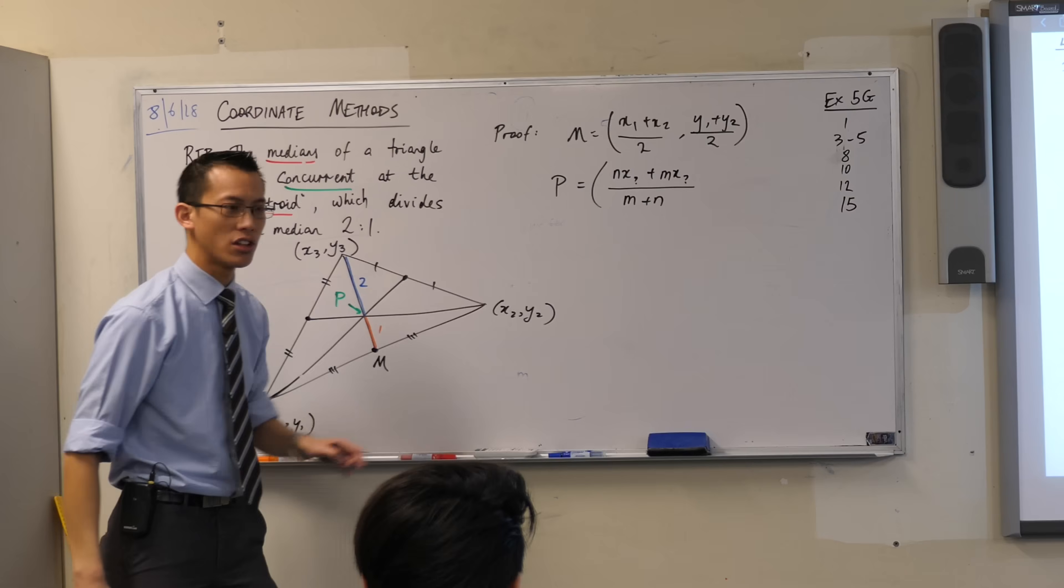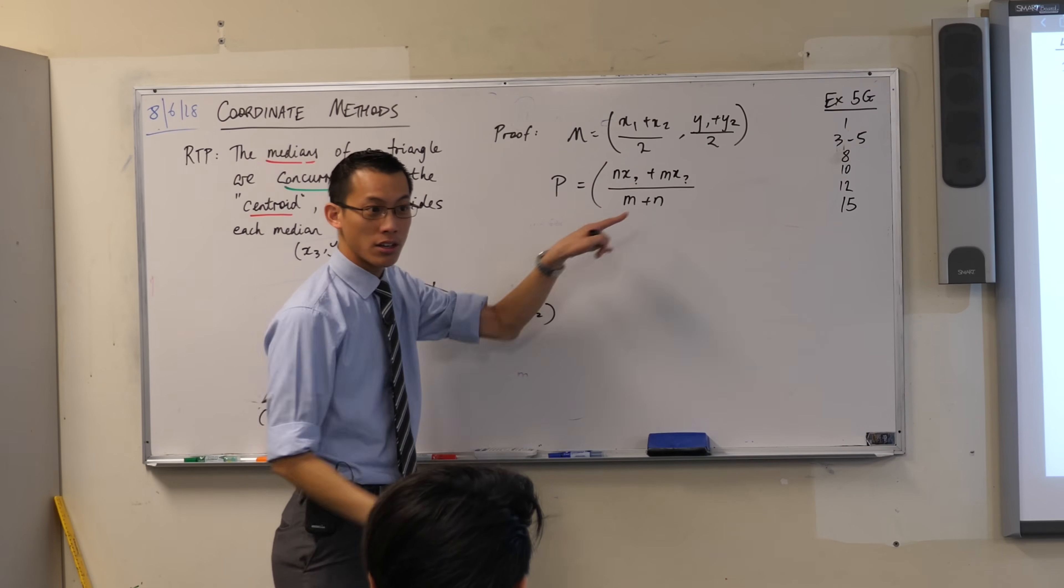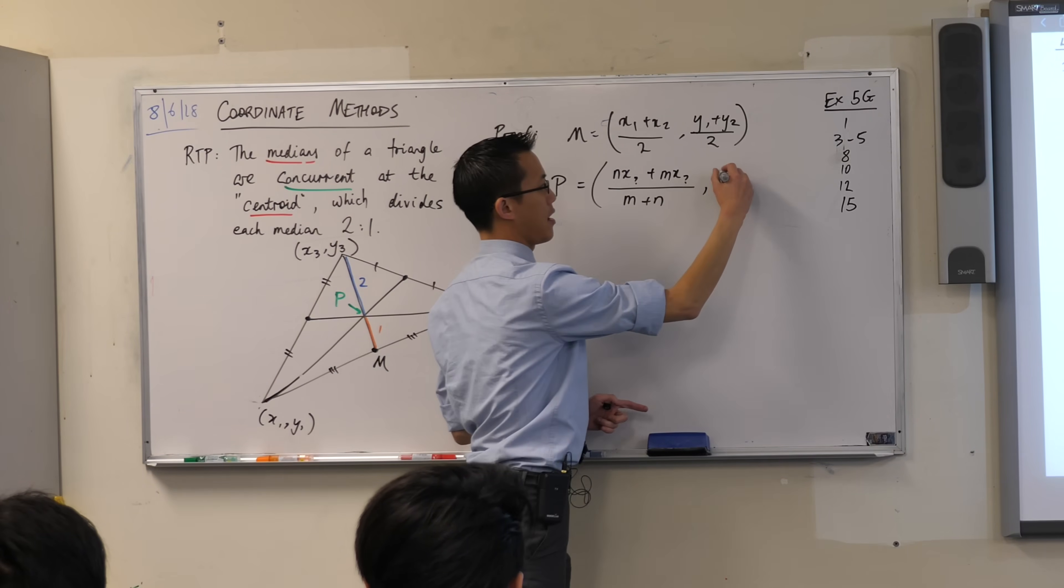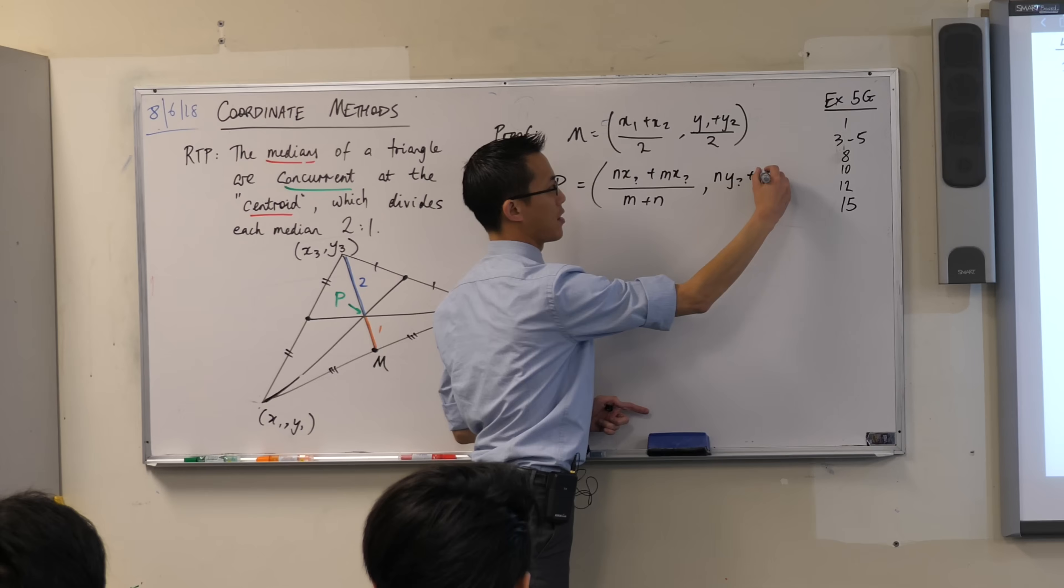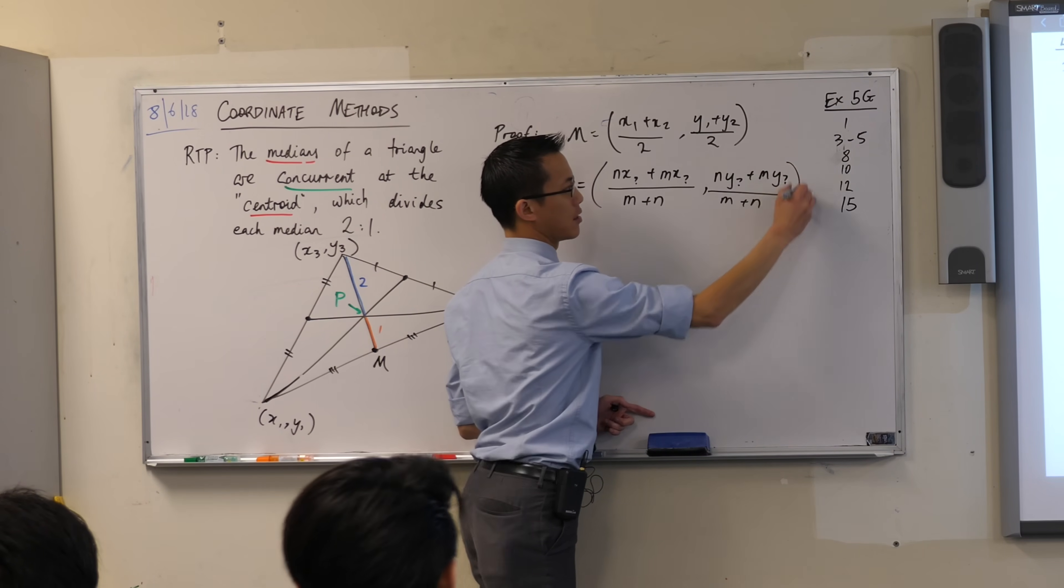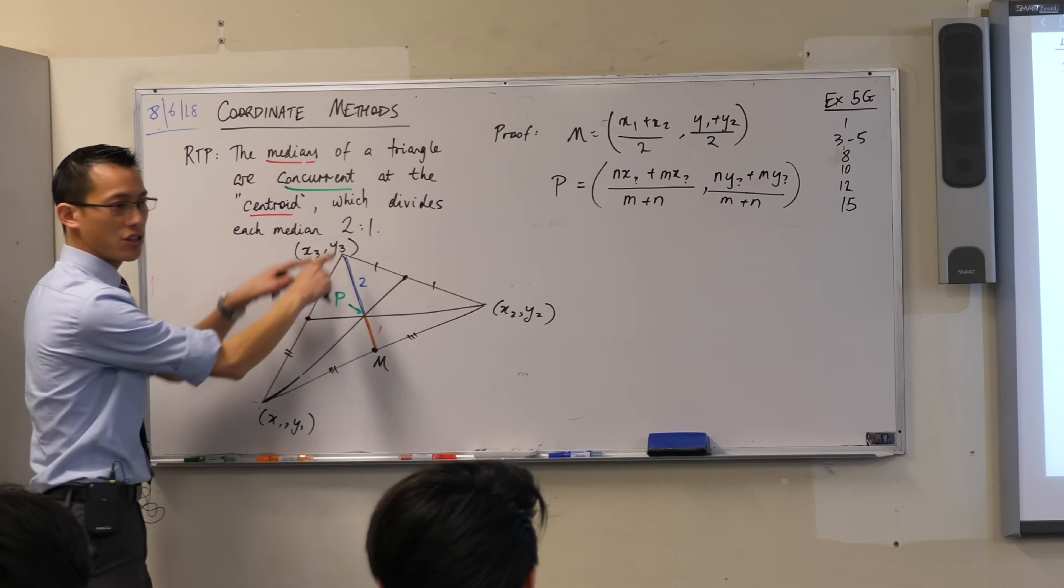Do you remember this? Do you remember when you learnt it and you're like, oh, you've got to watch out for that order because you'll do it the other way around if you don't get the order correct? And then you do the same thing with the y's, right? n and then your y-coordinate, m and then your other y-coordinate, and then you add your two parts of the ratio, right?